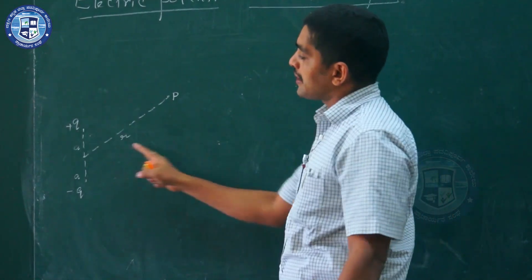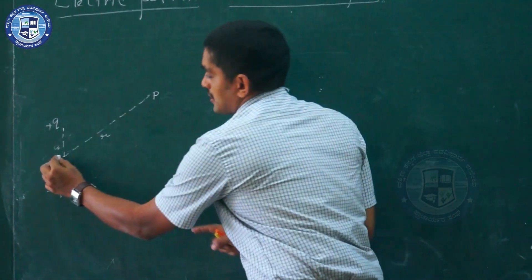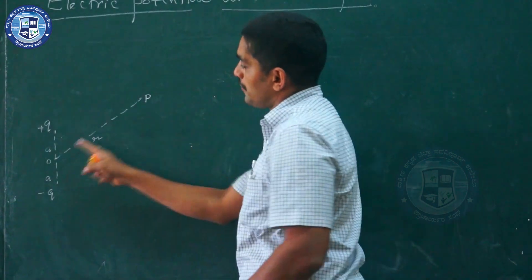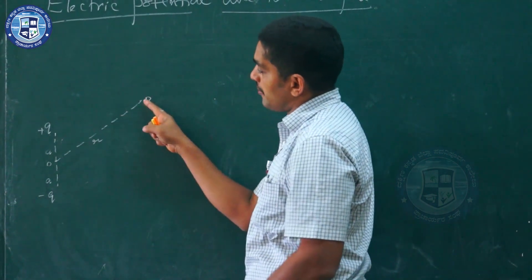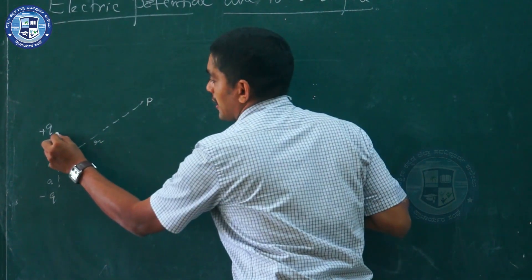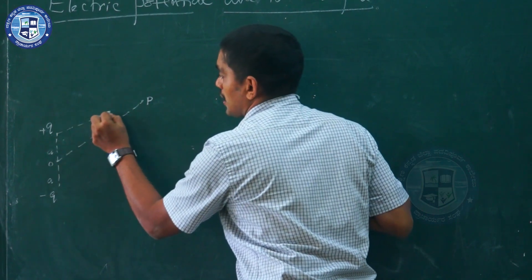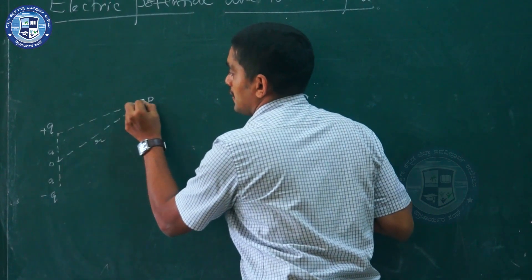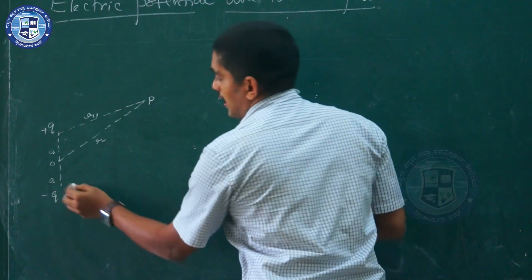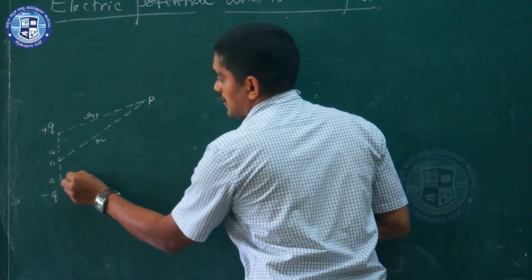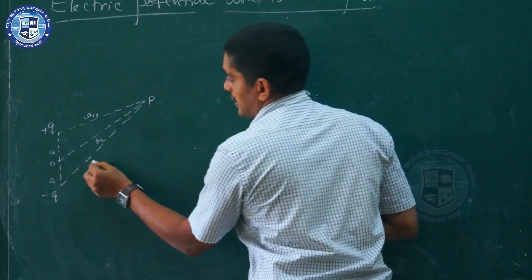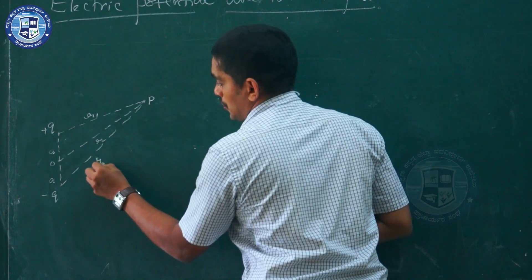If we take the vector from point O to P, the position vector will be vector R. Now, let us take the distance from the positive charge to P as R1, and the distance from the negative charge to P as R2.